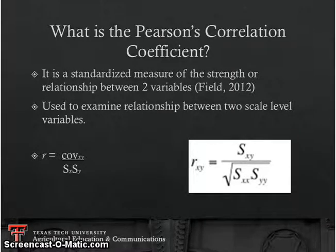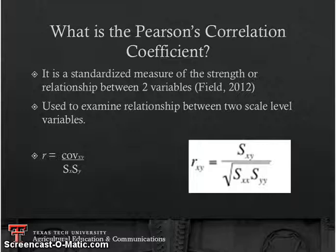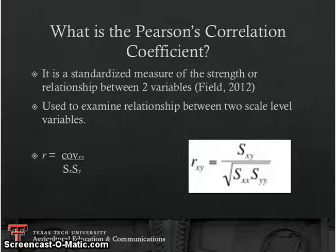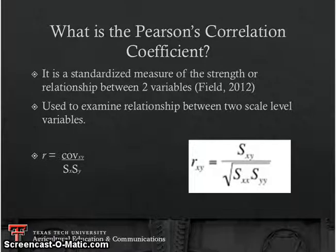Looking at the equation, r equals the covariance of x and y over sx and sy. The covariance on the top of the equation is the standardized covariance, and this equation is very similar to the equation for variance where the differences are squared. In covariance we actually multiply them by the corresponding difference in the second variable — that's what denotes the top section — and then the bottom is the standard deviation of x multiplied by the standard deviation of y.